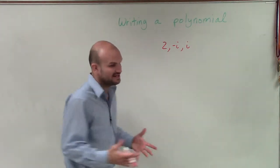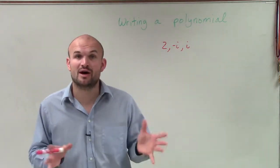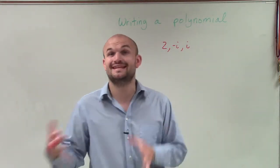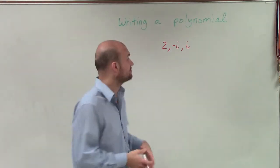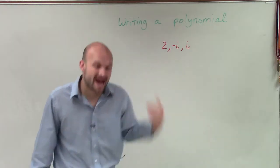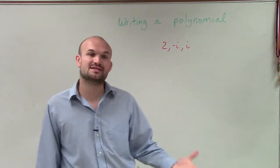But what's very important is whenever we have the square root of a number, we always have to make sure we include the positive and the negative, right? That's the exact same thing when we have our imaginary, our complex number. When we have a negative i or a positive i, we have to make sure we include the complex conjugate.